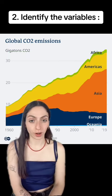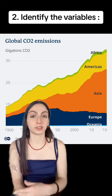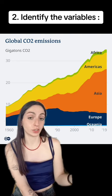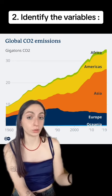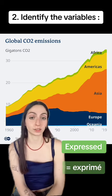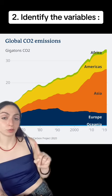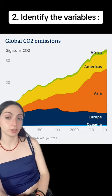In this graph, the y-axis represents the emission of CO2 in the world, and it's expressed in gigatons. And the x-axis represents the years.